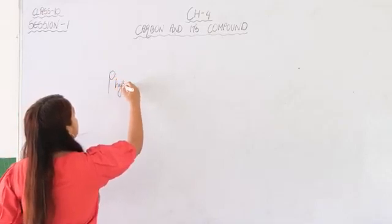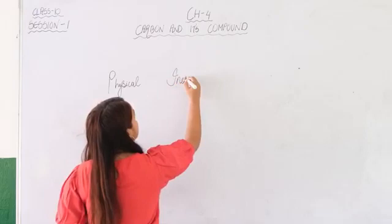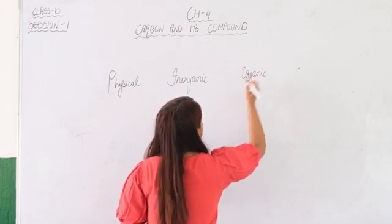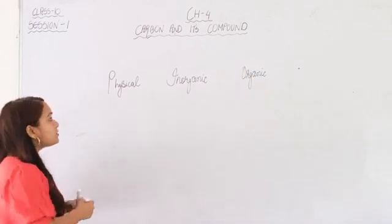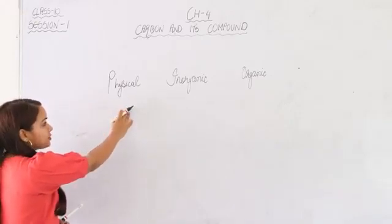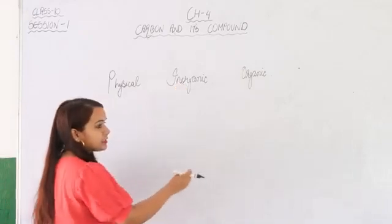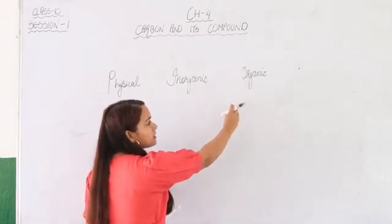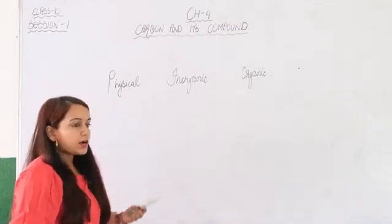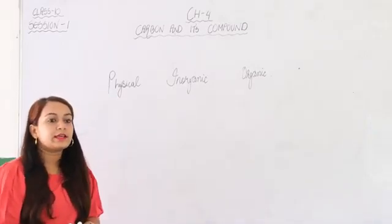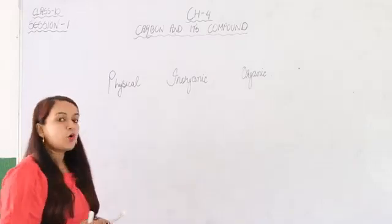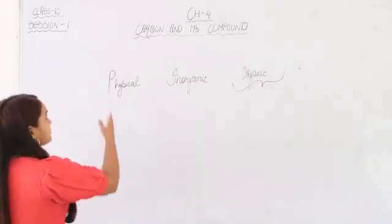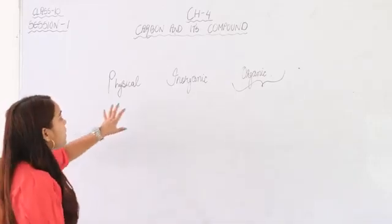Chemistry is divided into three branches: physical, inorganic, and organic. In physical chemistry, mostly theories and technologies of physics are applied to chemistry. In inorganic chemistry, it is basically the study of all compounds except carbon and its compounds. Organic chemistry is purely the study of carbon and its compounds. Carbon being so versatile, it was felt that a separate branch should be created to deal only with carbon — known as organic chemistry.